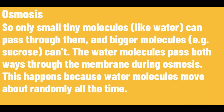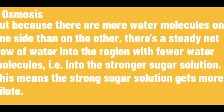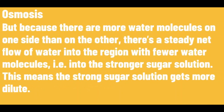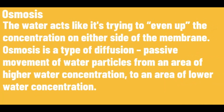The water molecules pass both ways through the membrane during osmosis. This happens because water molecules move about randomly all the time. But because there are more water molecules on one side than on the other, there's a steady net flow of water into the region with fewer water molecules. This means the stronger sugar solution gets more dilute. The water acts like it's trying to even up the concentration on either side of the membrane.